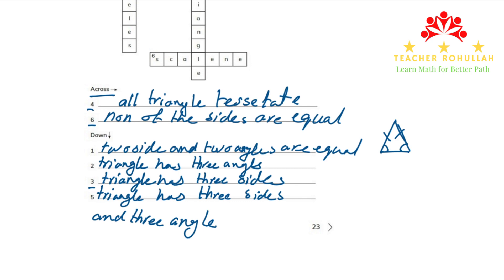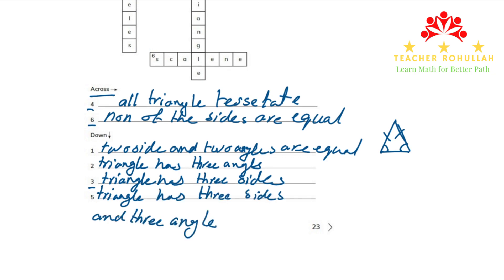With question number nine we are done with exercise 2.1 of Workbook 5 of Cambridge Primary Mathematics. I hope it helps you learn something about types of triangles according to their sides, according to their angles, and also tessellation. To get notified about upcoming videos please subscribe to my channel, like the videos, and if you have any questions you can leave them in the comment section. Have a nice time and thank you so much.